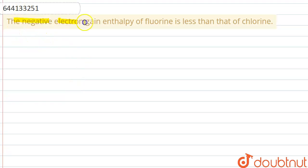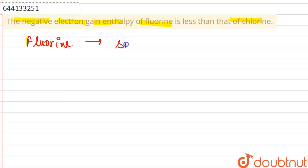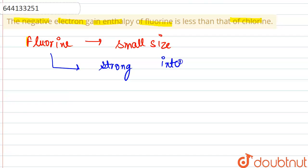The negative electron gain enthalpy of fluorine is less than that of chlorine. This is because fluorine is actually having small size. Because of the small size of fluorine, there are strong inter-electronic repulsions in its small orbitals.